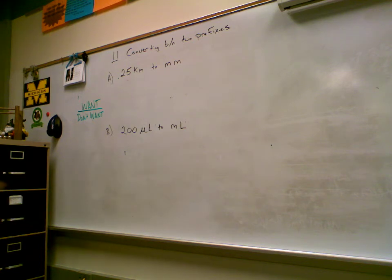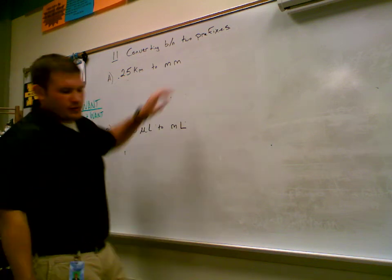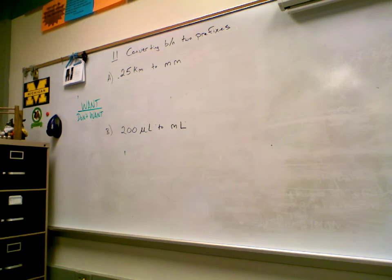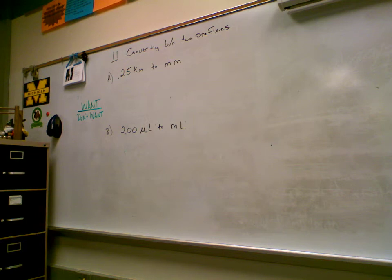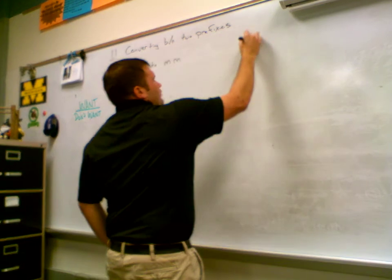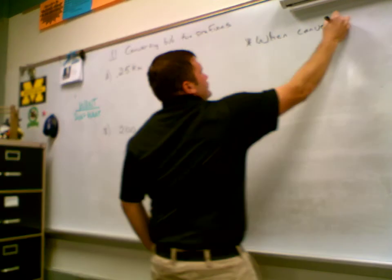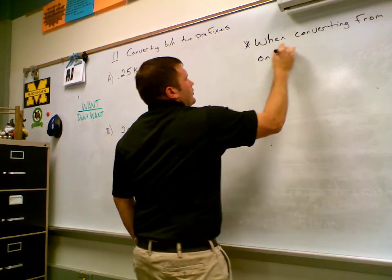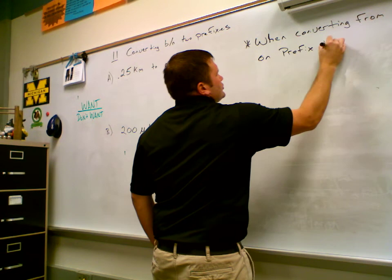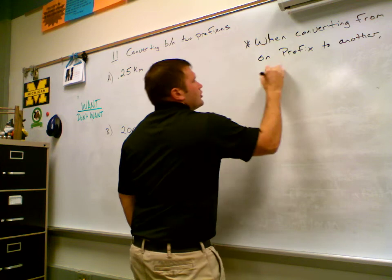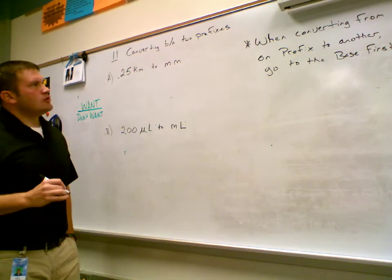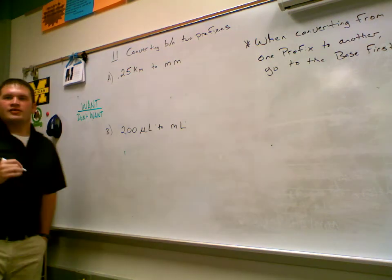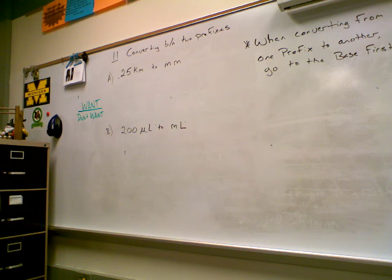We're going to convert between units here — from one prefix unit to another. We're going from kilometers to millimeters. In order to go from kilometers to millimeters, you need to convert kilometers to meters first, and then meters to millimeters. When converting from one prefix to another, go to the base first.